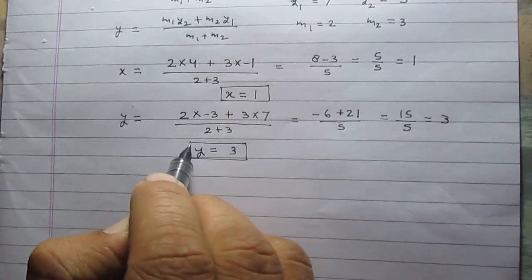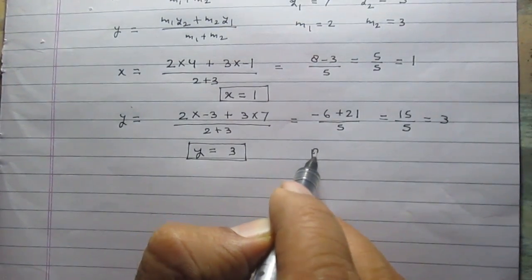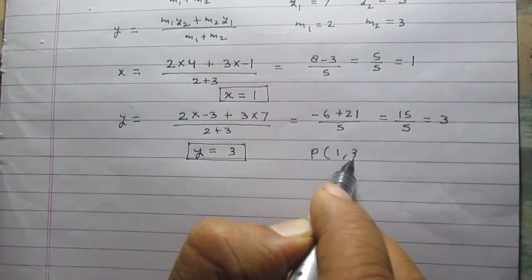So we can say that coordinates of point P are (1, 3).